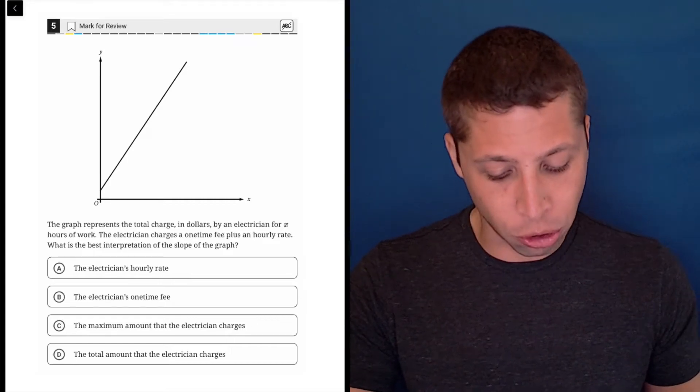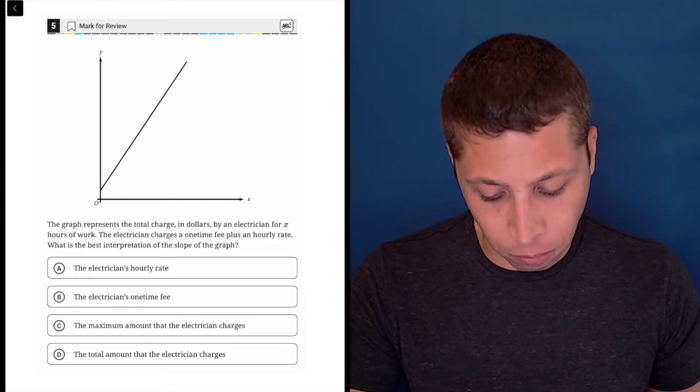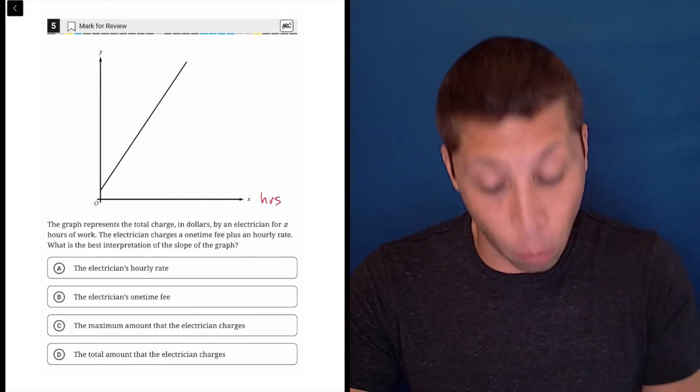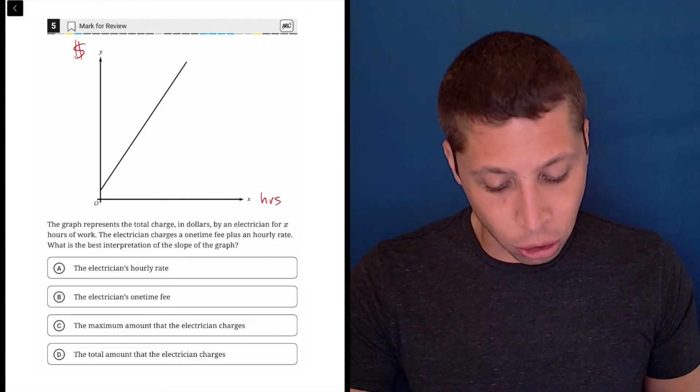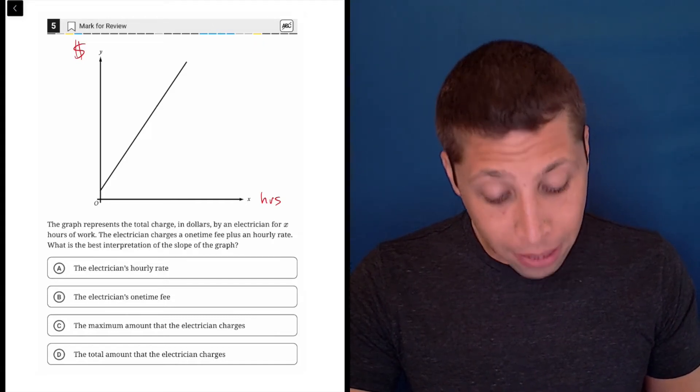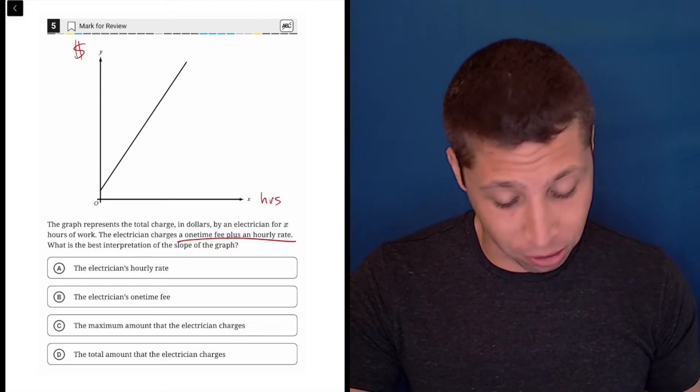The graph represents the total charge in dollars by an electrician for X hours of work. So maybe if you want, you can label that hours and charge as money. The electrician charges a one-time fee plus an hourly rate. Okay. That's pretty standard for these kinds of questions.